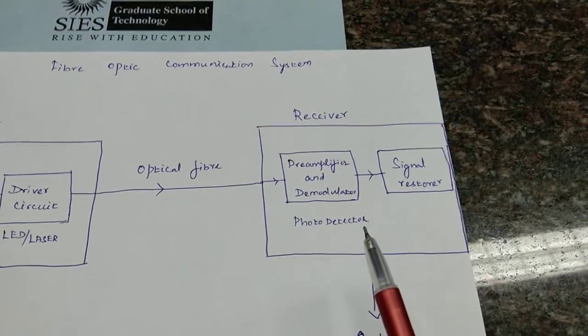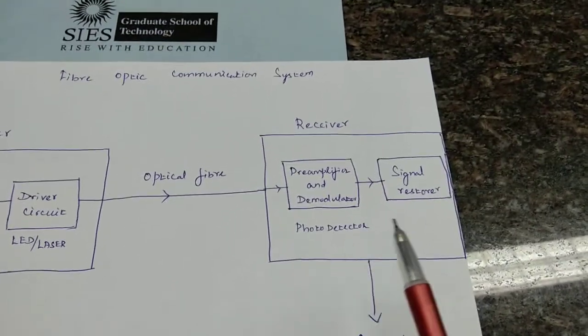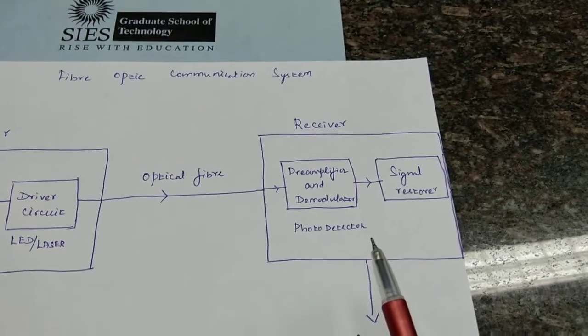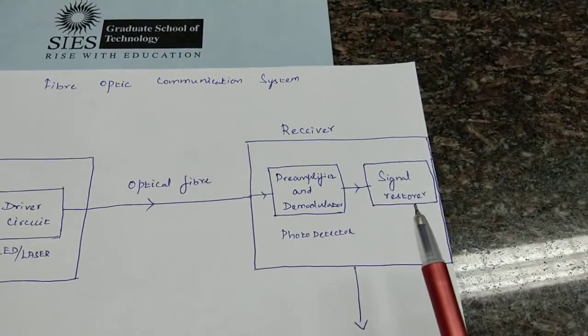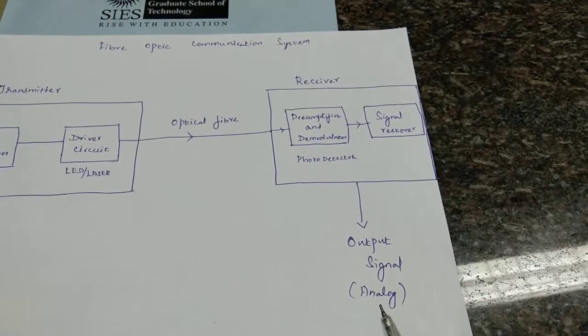Of course, preamplifiers would be needed because the signal strength would be very weak. So we have to amplify to bring it back to the original signal strength. And then we make use of a signal restorer which would bring back the original analog sound signal.